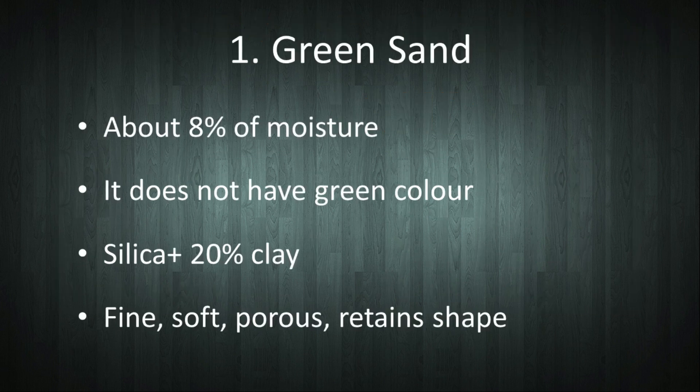The first one is green sand. It is the building block for molds. The sand contains about 8 percent moisture in it, hence it is termed as green sand. Let me tell you that it does not have a green color. It is silica with 20 percent clay. It is fine sand — soft, porous, and most importantly, when pressed it retains its shape.